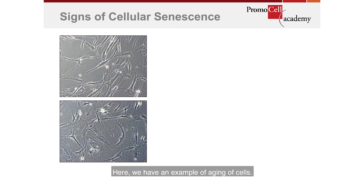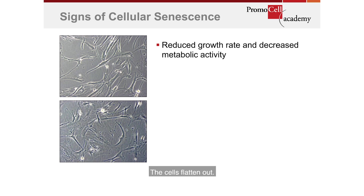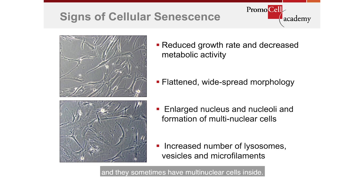Here we have an example of cell aging. There are several hallmarks you can observe comparing top to bottom in the image: the cells flatten out, they are more granular, they have increased lysosomes and other organelles, and sometimes multi-nuclear cells are present. These are the hallmarks of aging.